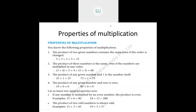The second extra property: the product of two odd numbers is always odd. Odd numbers end with 1, 3, 5, 7, or 9. Examples: 3 times 5 is 15, and 7 times 3 is 21, both odd. Also, 15 times 3 is 45 and 19 times 3 is 57, both odd numbers.